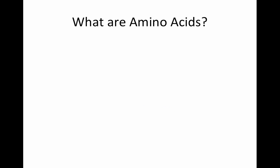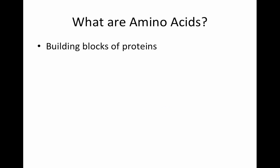Amino acids are the building blocks of proteins. Each amino acid is a monomeric subunit that can react with other amino acids and create a polymer chain. This chain, if it gets long enough, is what we call a protein.